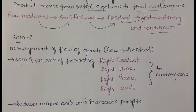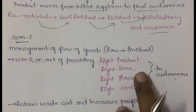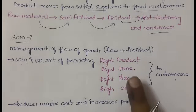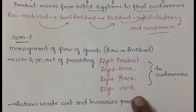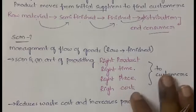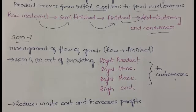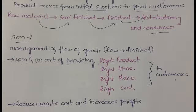For example, if you are manufacturing leather coats, sweaters, or jackets in summer, it's a waste — you cannot sell them in summer. That is 'right time.' Similarly, selling jackets in a desert like Rajasthan has no meaning — that is 'right place.' And you need to sell them at the right cost. Supply chain management reduces waste, reduces money and time waste, and ultimately increases profits.